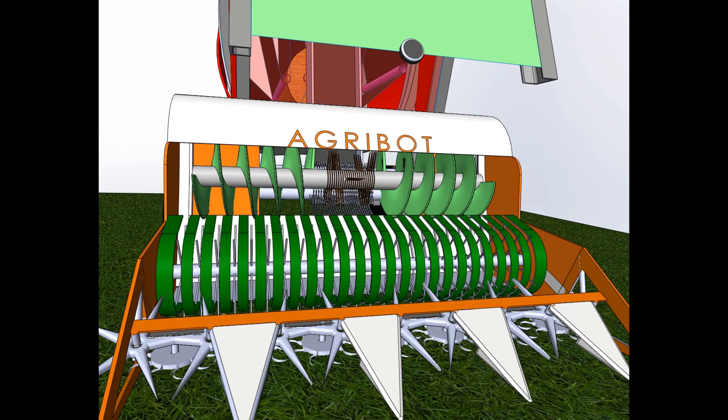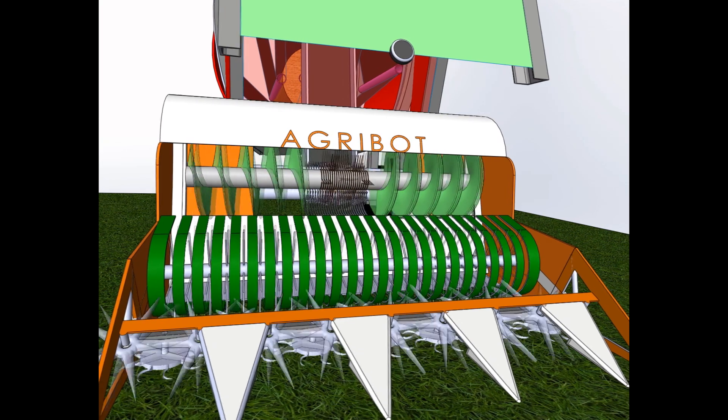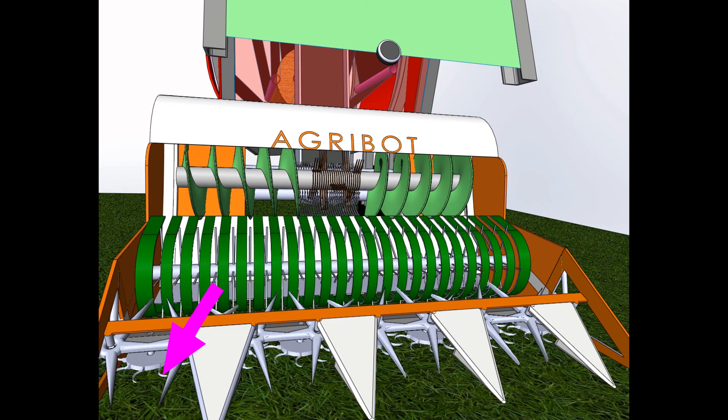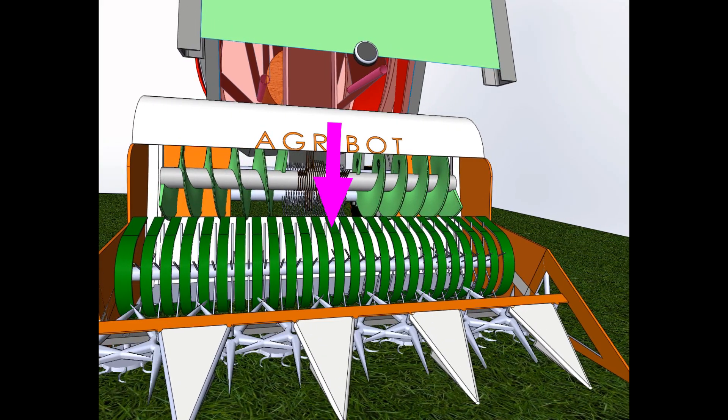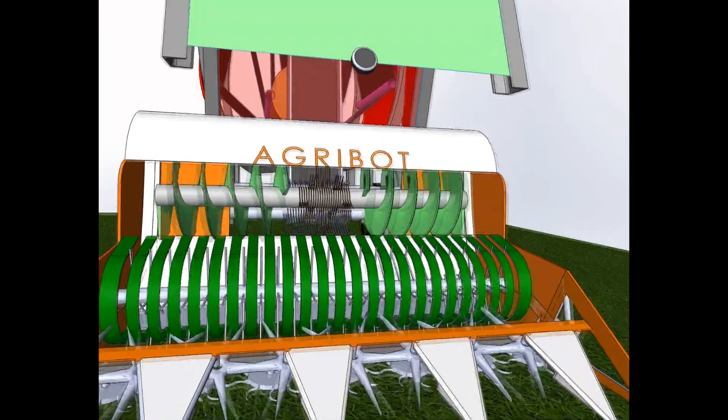This unique cutter mechanism is equipped with opposite rotating star-shaped holders which help in gripping the stubble. C-shaped rotating blades are subsequently used for cutting. A pusher is used to direct the stubble into the machine.